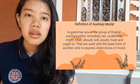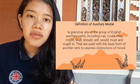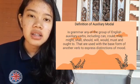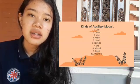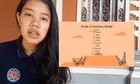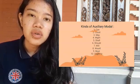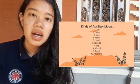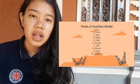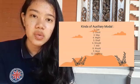The kinds of auxiliary modals available are 10: 1st is Can, 2nd is Could, 3rd is May, 4th is Might, 5th is Shall, 6th is Should, 7th is Will, 8th is Would, 9th is Must, and 10th is Ought To.